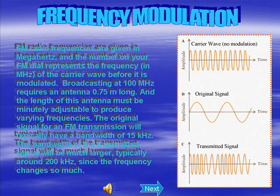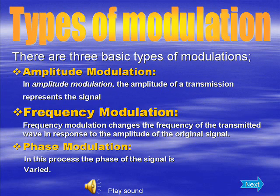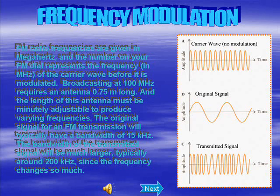For frequency modulation, FM radio frequencies are given in megahertz, and the number on your FM dial represents the frequency in megahertz of the carrier wave before it's modulated. Broadcasting at 100 megahertz requires an antenna 0.75 meters long, and the length of this antenna must be adjustable to produce varying frequencies. The original signal for an FM transmission typically has a bandwidth of 15 kilohertz.